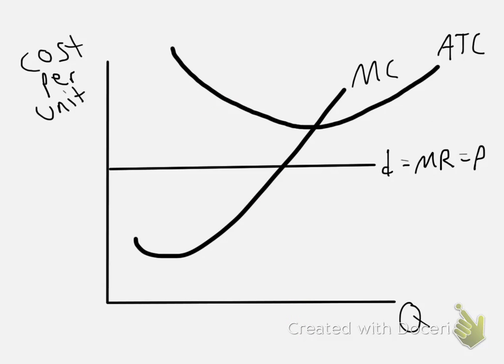Now let's go to an example where we're making economic losses. The logic is the same. We want to find the point where marginal cost equals marginal revenue, so we're going to go to this point right here where those two curves intersect. And then we go down and find that the firm will be producing at this quantity Q.